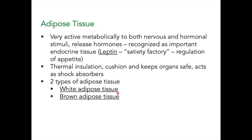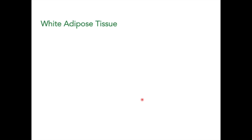There are two types of adipose tissue: white adipose tissue and brown adipose tissue. White adipose tissue is actually a misnomer — in gross section, adipose tissue is not white, it is pale yellow in color.